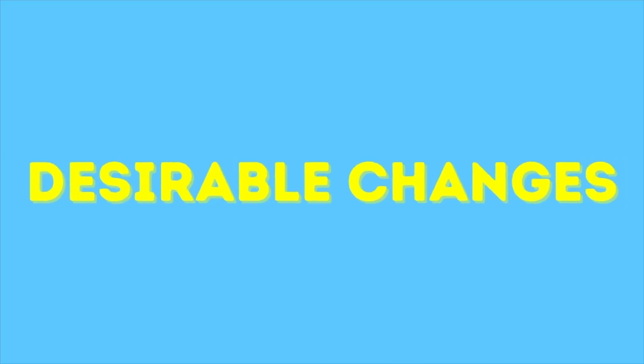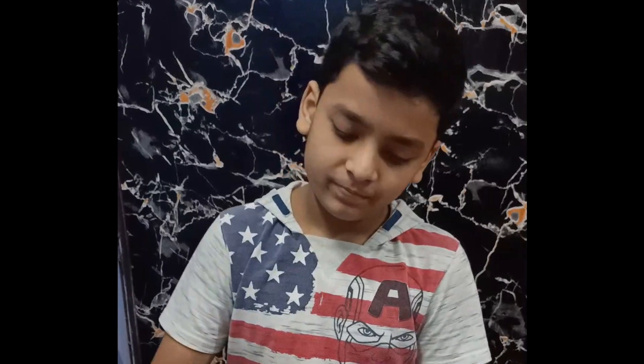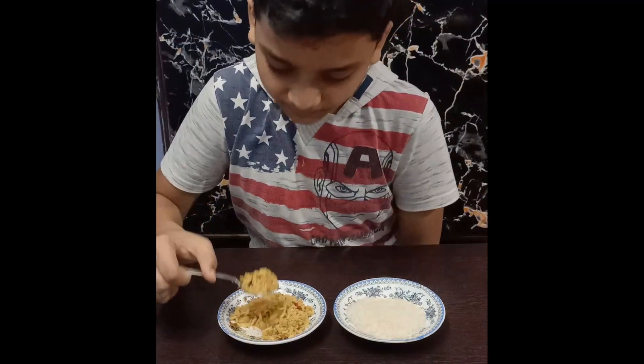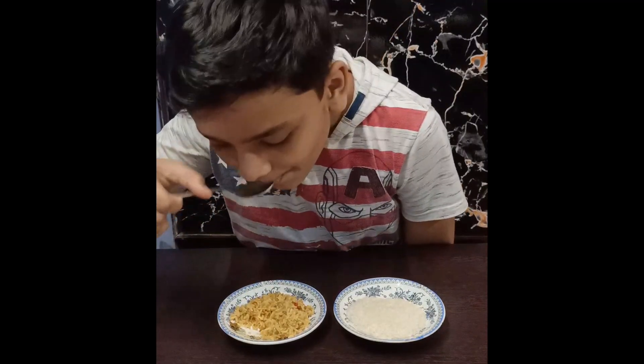Changes that are brought about by man or nature which produce good or desirable results are known as desirable changes. For example, ripening of a fruit, cooking of a pilaf — this is definitely a desirable change.